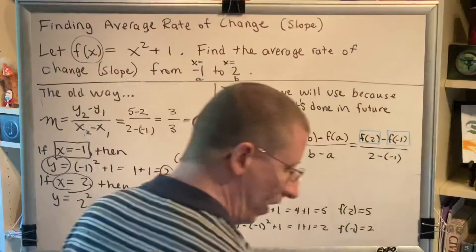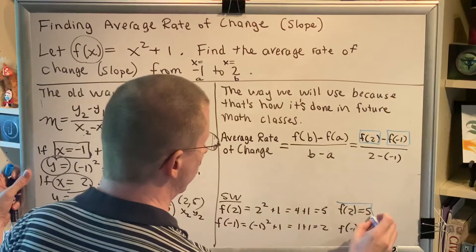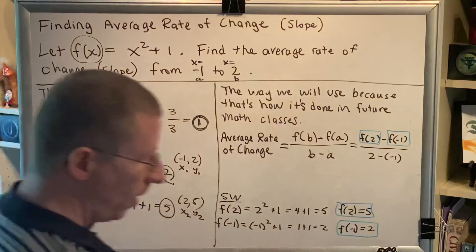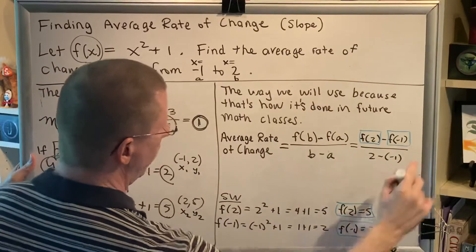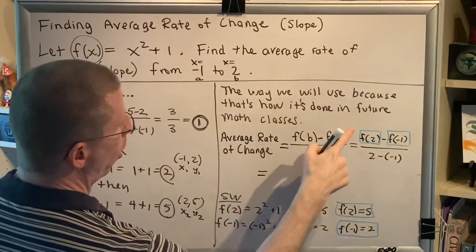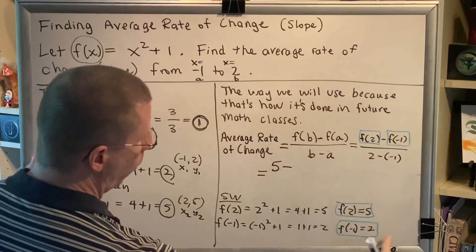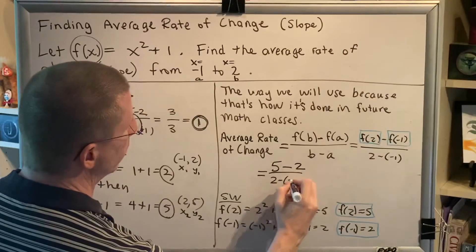Now that we know the values of both of those evaluated functions, we can plug them in. So f of 2, that's just a 5. And f of negative 1, that's just a 2. So instead of f of 2, we'll write 5. Instead of f of negative 1, we'll write 2. And then down here, we still have 2 minus negative 1.